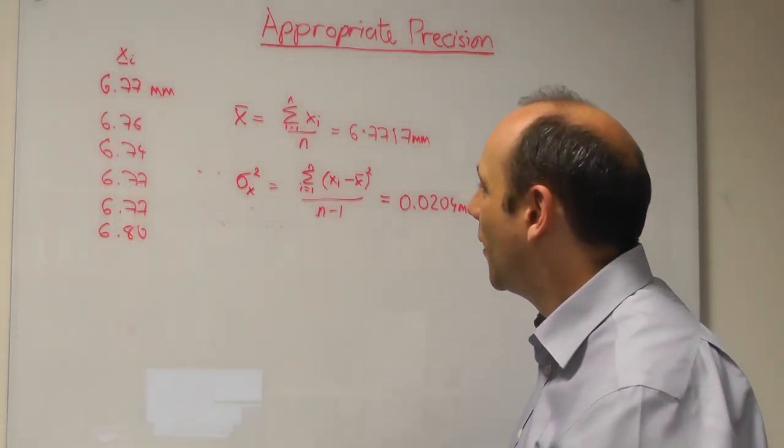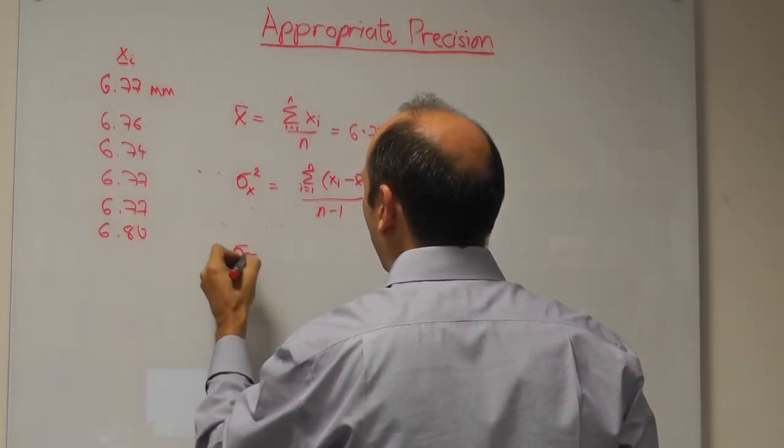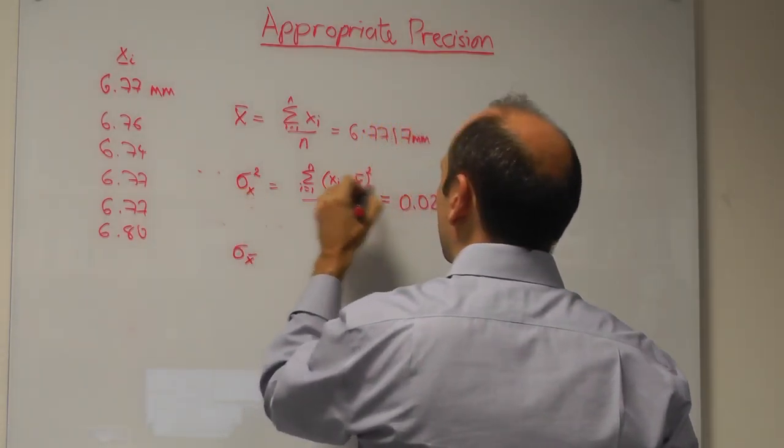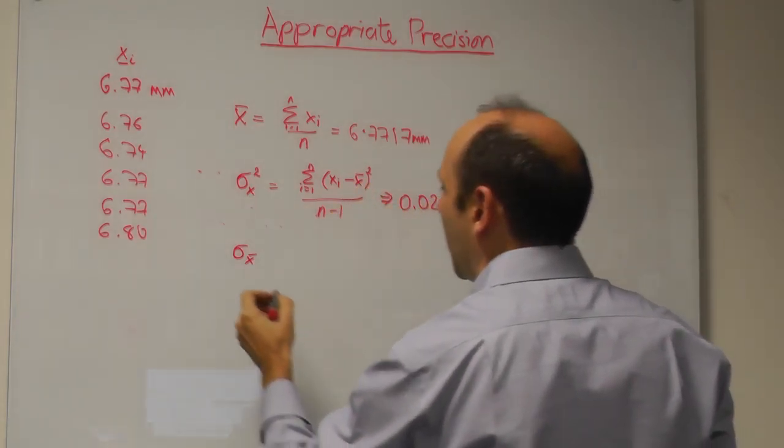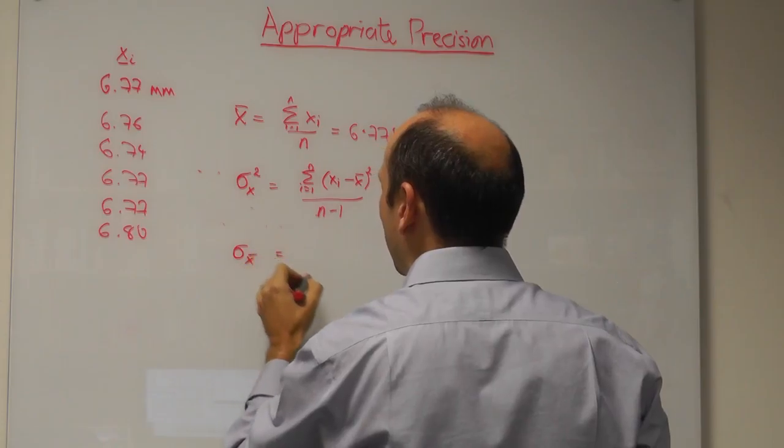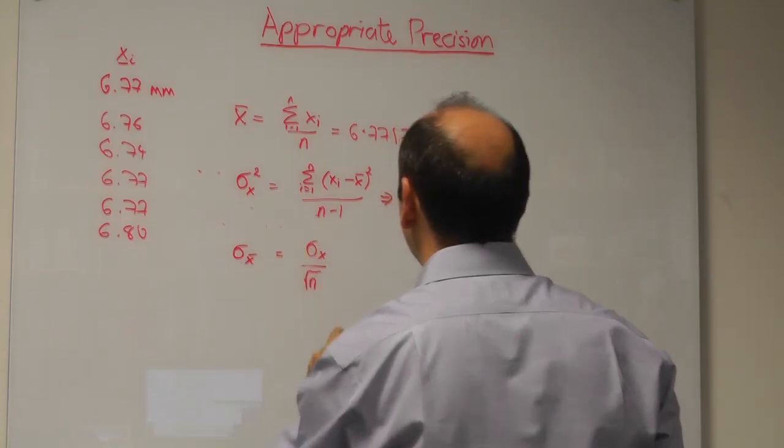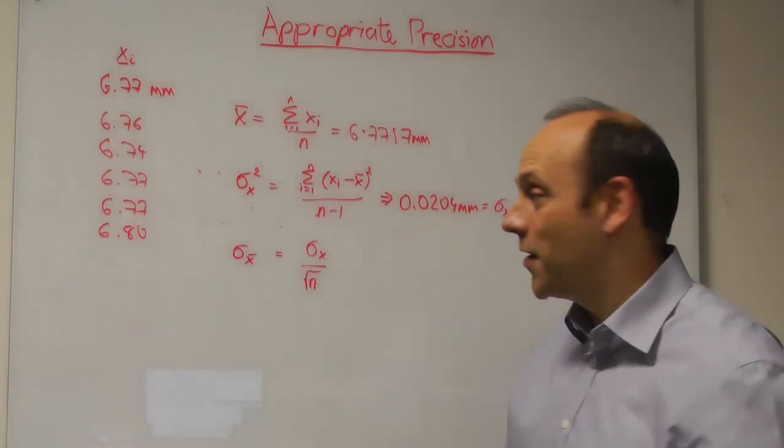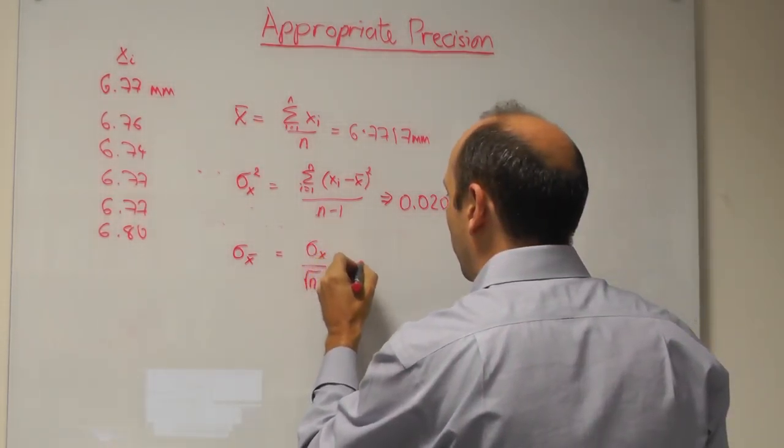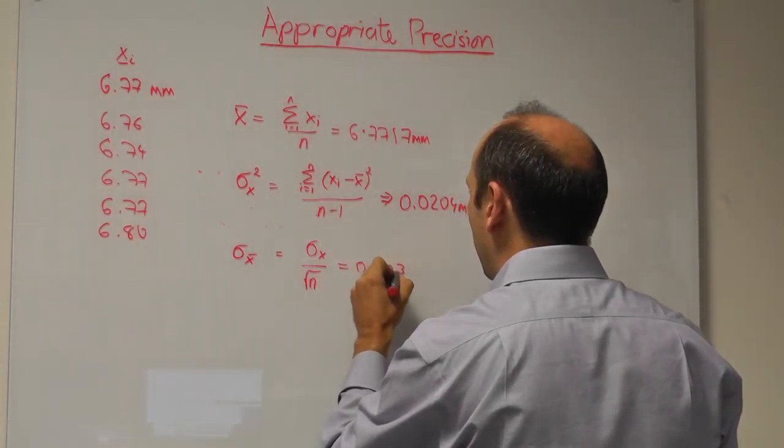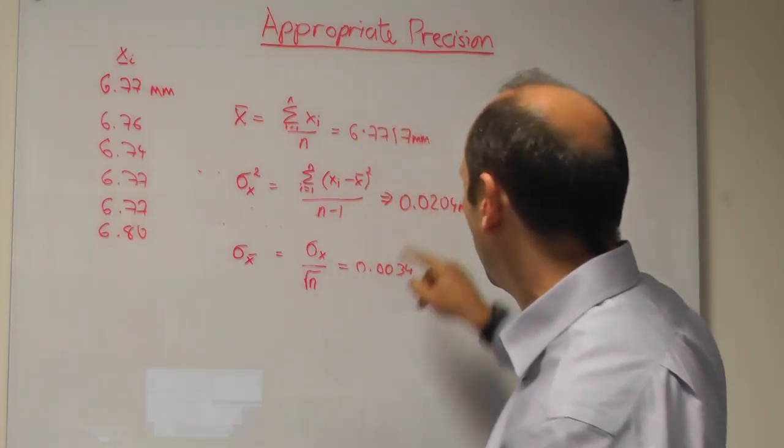If I want to find the uncertainty in the mean, the uncertainty in X-bar squared is equal to sigma X squared. The uncertainty in X-bar is given by the uncertainty in X divided by the square root of the number of measurements. So I divide that number by a further square root of 6, and that gives me 0.0034. And that's quite a bit smaller.